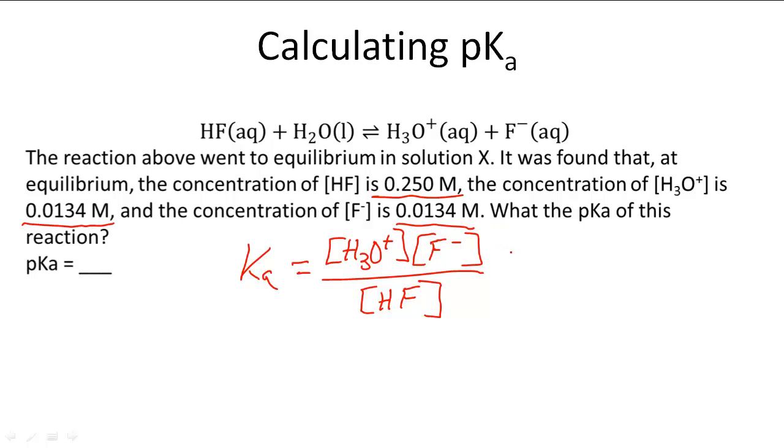Now that we have that, we can calculate it because we know all the concentrations. So that's going to be 0.0134 times 0.0134 divided by 0.250, and that is going to give us a Ka of 7.18 times 10 to the negative fourth.